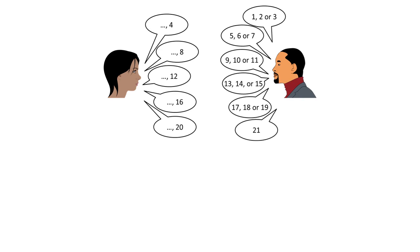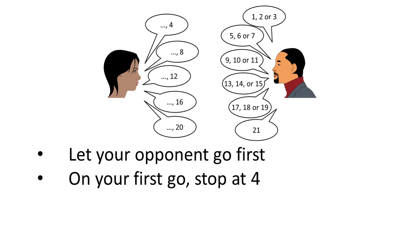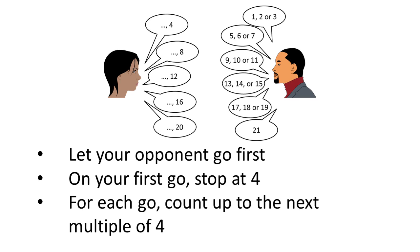So to recap, to make sure that we definitely win the game of twenty one, we're going to let the opponent go first. Whatever they say, we're going to continue the count but stop at four. And then for each go after that, we're going to count on up to the next multiple of four, which will make sure that we get to twenty and they get to twenty one.